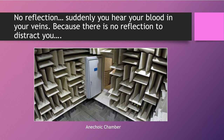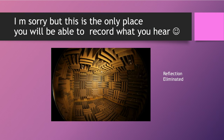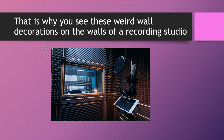In an anechoic chamber with no reflection, you can suddenly hear the blood in your veins because there's nothing to distract you. That is the only place where you can record what you actually hear — reflection completely eliminated. But this is impossible to build in a New York apartment. That is why you see all those weird wall decorations on the walls of a recording studio — they are all there to eliminate reflection and get a clean sound from your mouth to the microphone.